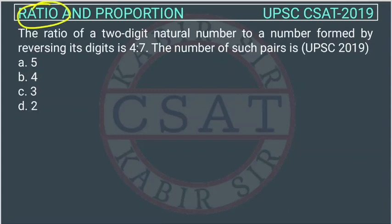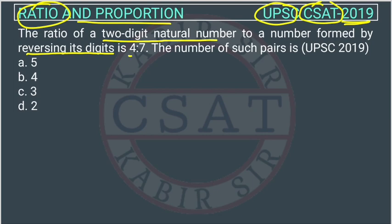This is a question of ratio and proportion asked by UPSC in their CSET paper of 2019. The ratio of a two-digit natural number to a number formed by reversing its digits is 4 by 7. The number of such pairs is what we're asking about - how many pairs can be formed?